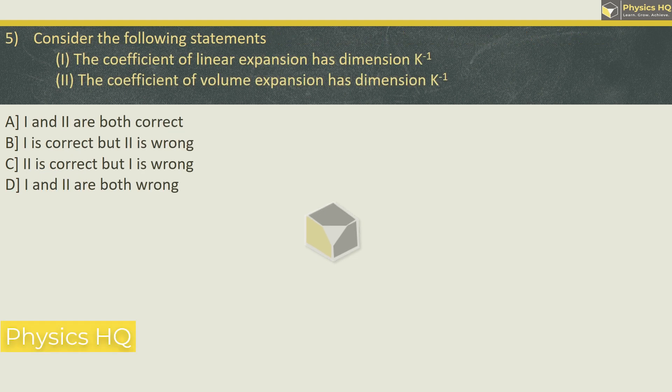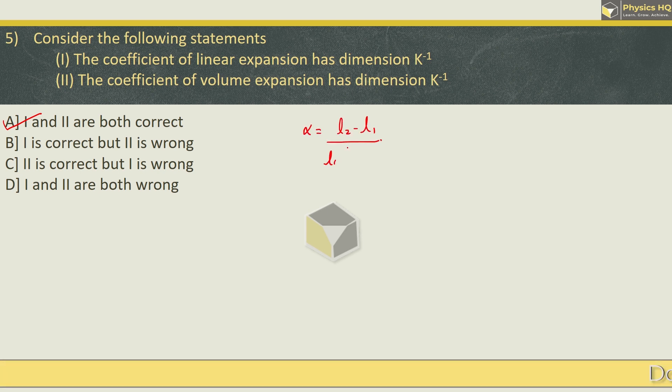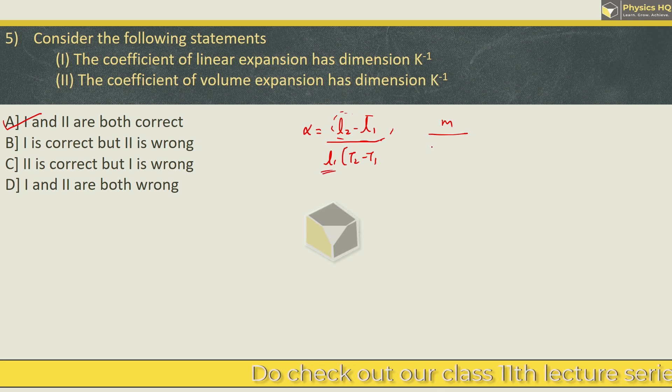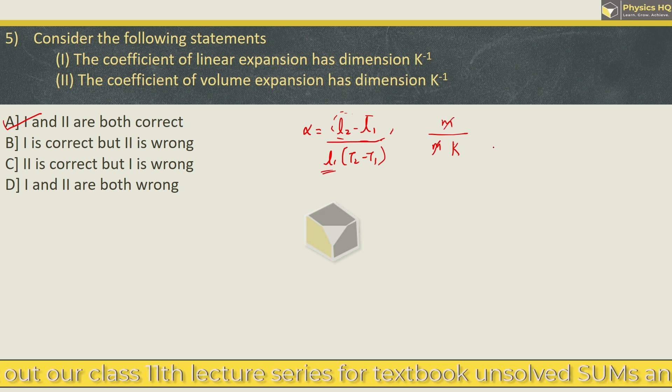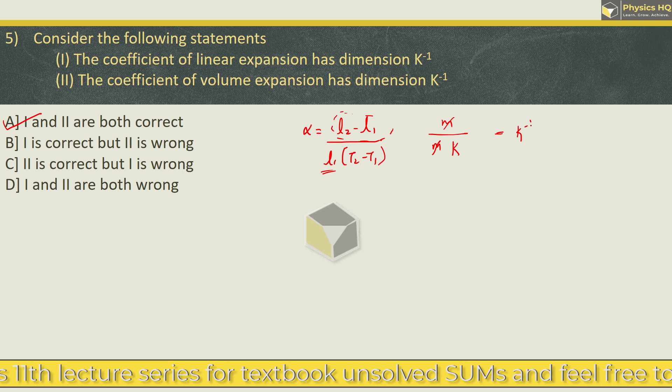Consider the following statements: The coefficient of linear expansion has dimension K⁻¹. Second, the coefficient of volume expansion has dimension K⁻¹. Let me tell you both are correct. So option A is correct. Coefficient of linear expansion α is given by the formula (L₂ - L₁)/(L₁ × (T₂ - T₁)). So L₂ - L₁ has the dimension of meter. In the denominator, L₁ also has the dimension of meter. T₂ - T₁ has the dimension of Kelvin. So meter to meter cancel, and we will be left with Kelvin⁻¹.